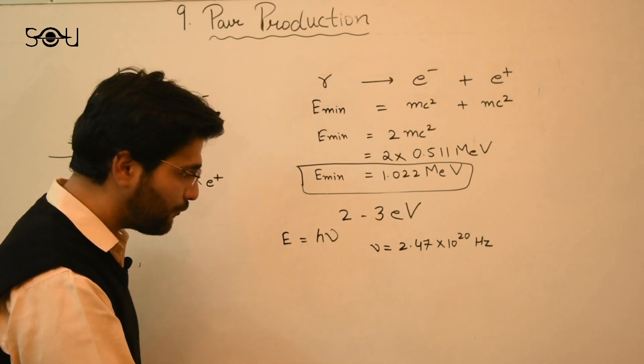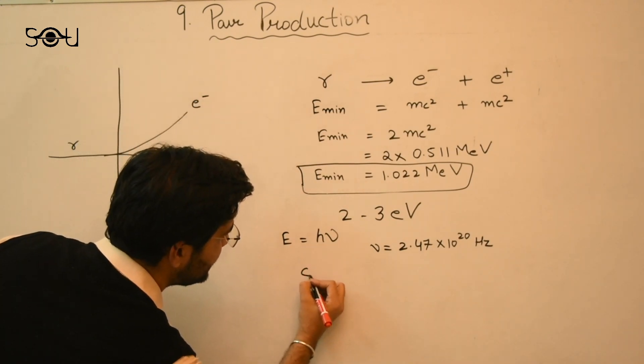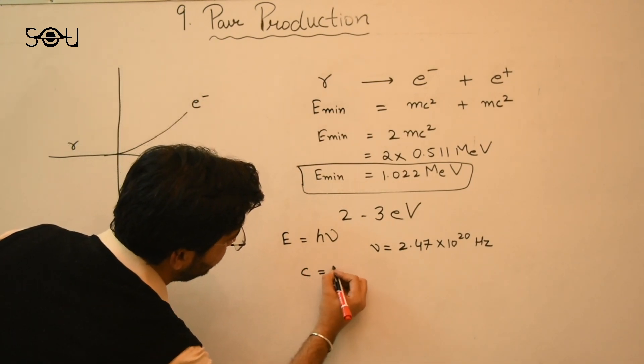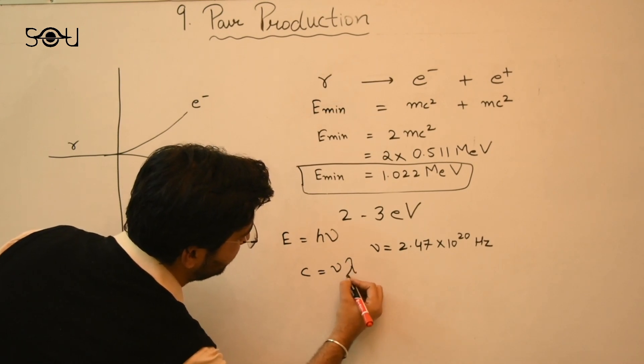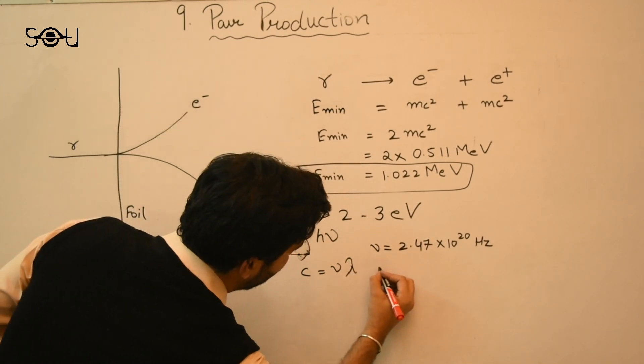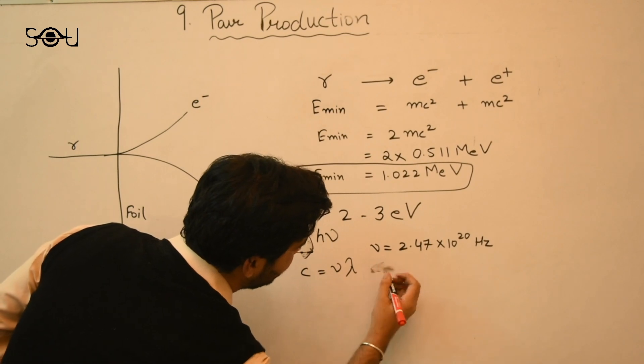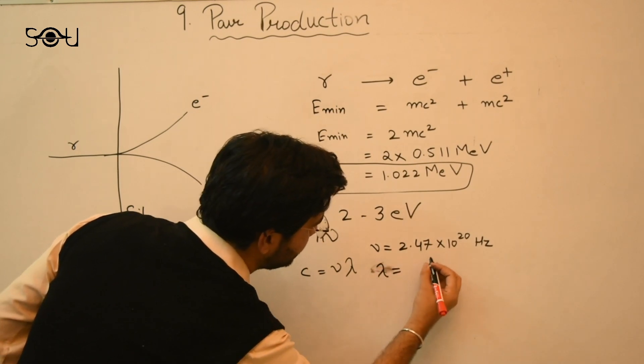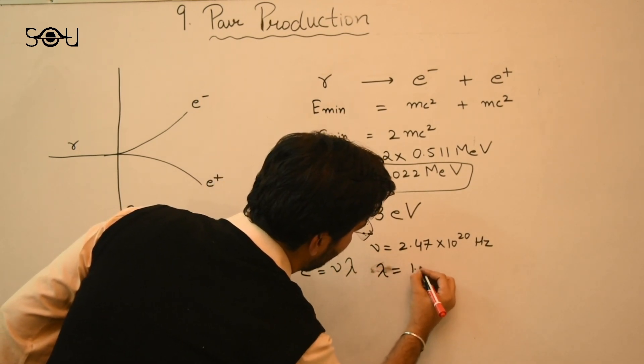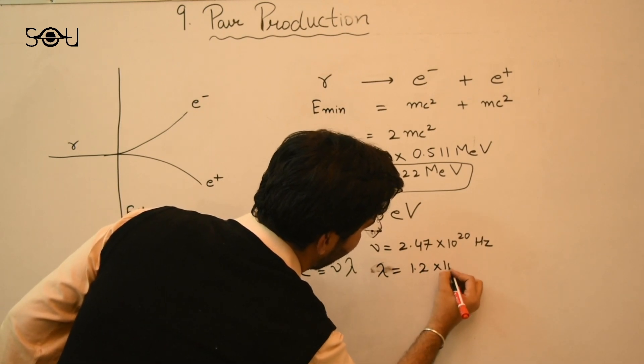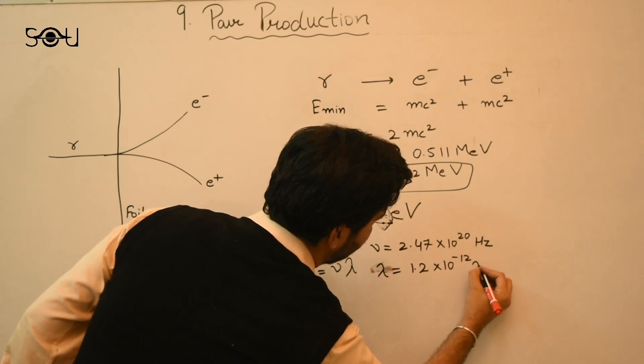And in order to find the minimum wavelength, you have to use the relation C, which is the speed of light is equal to nu into lambda. Lambda is the wavelength. So the lambda comes out to be the wavelength comes out to be 1.2 into 10 raised to power minus 12 meters.